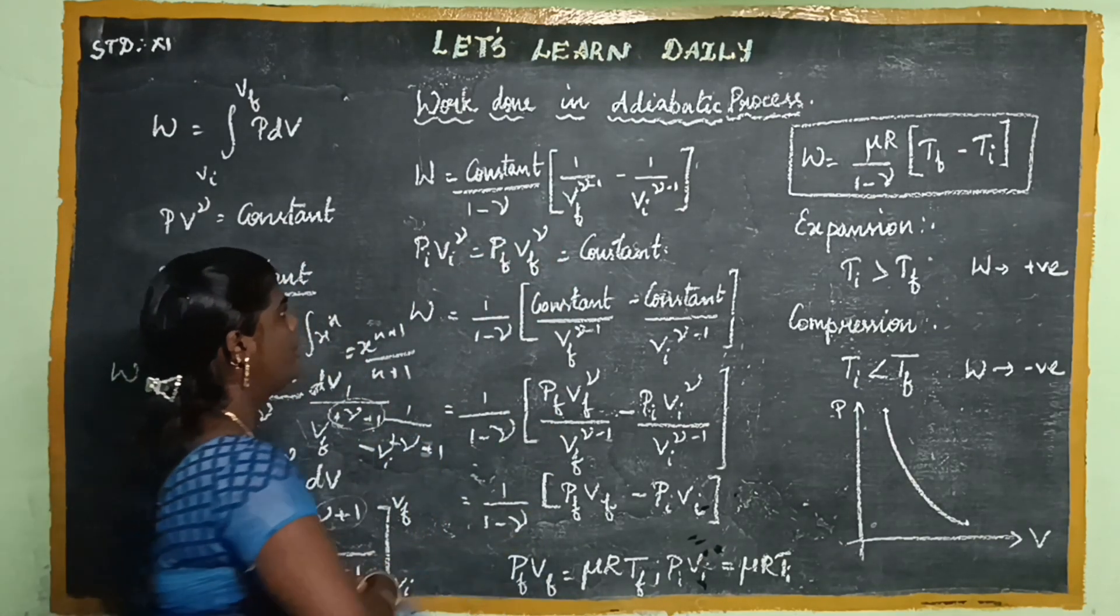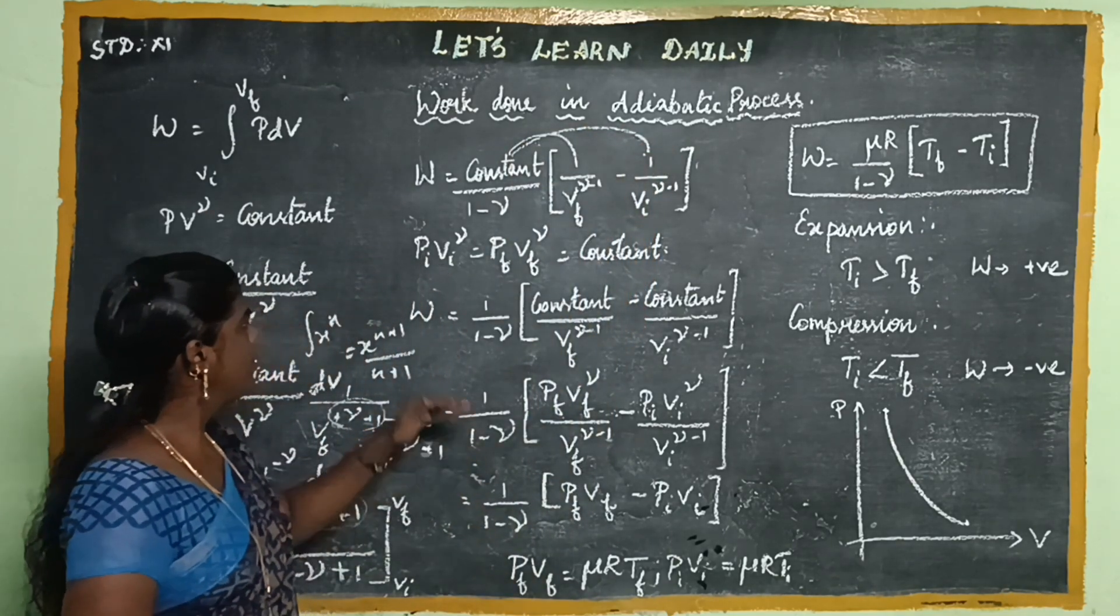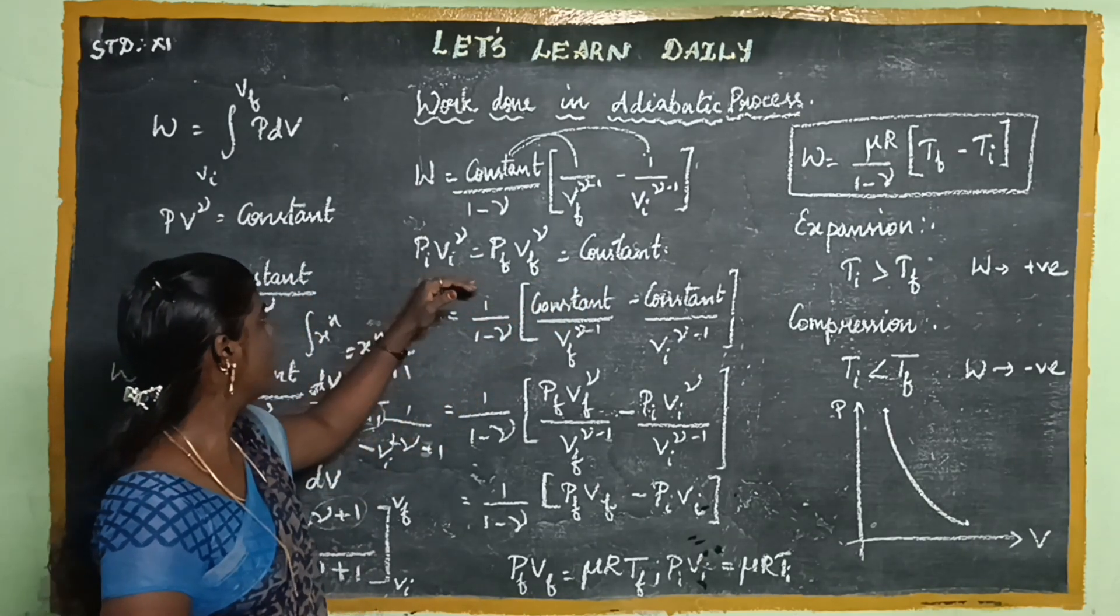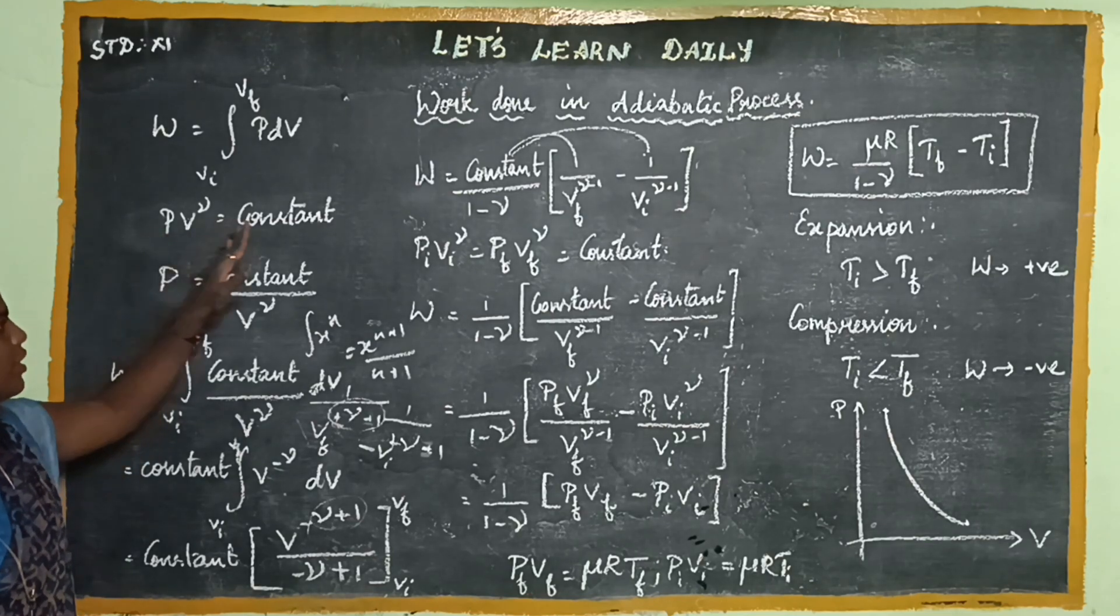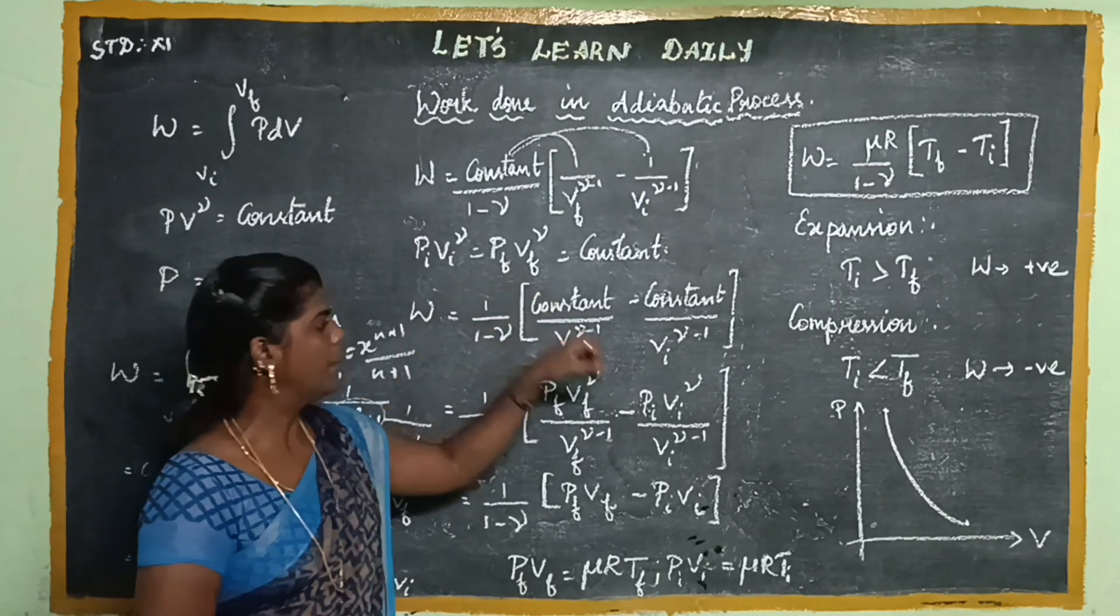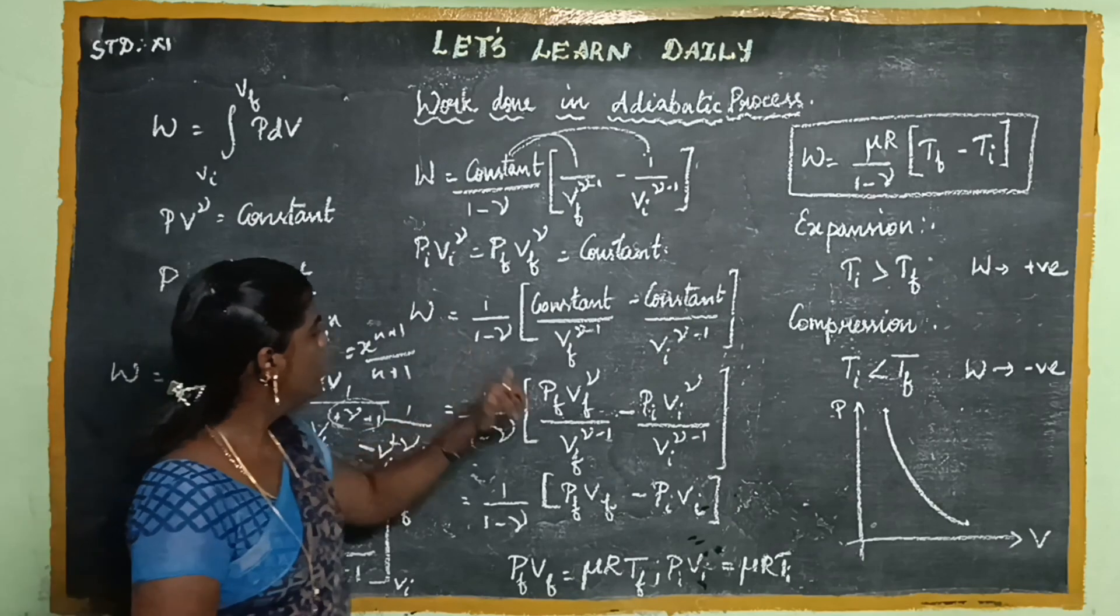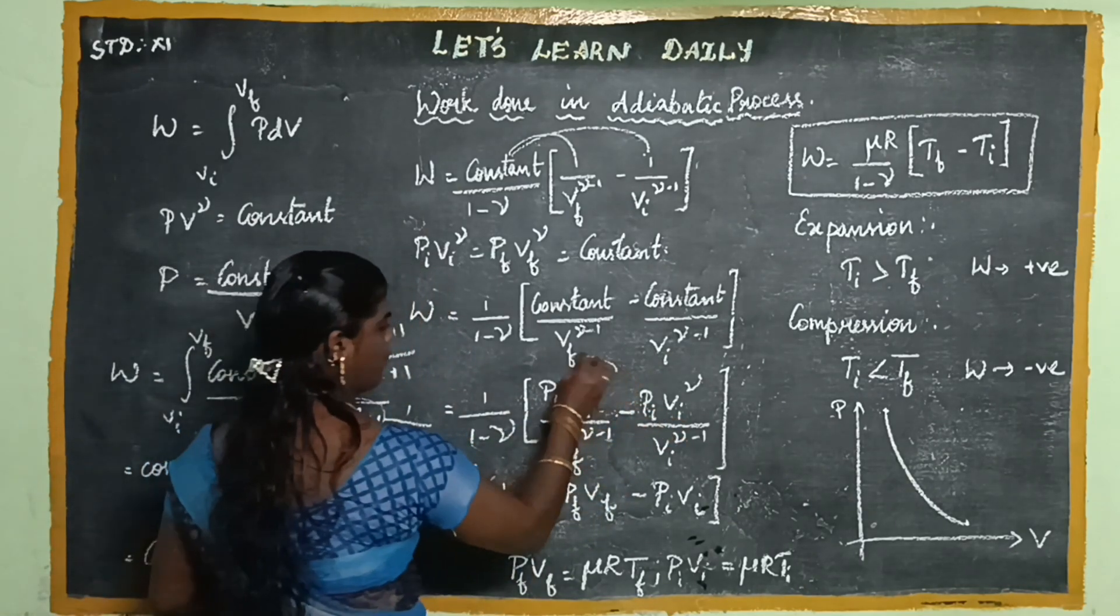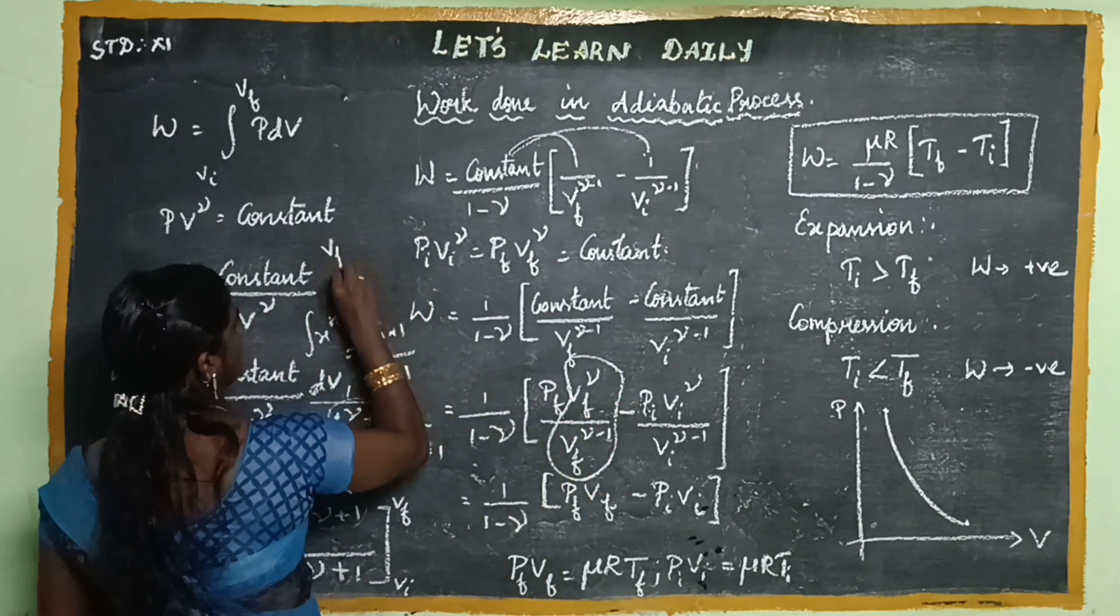Now the constant is written here. Now multiply by the constant. The constant equals PIVI^gamma, which also equals PFVF^gamma.